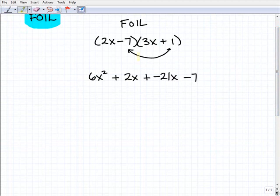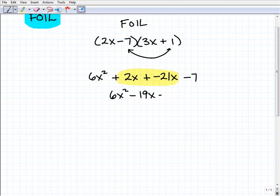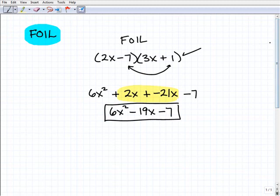And now all we have to do is combine like terms and finish this up, and we get 6x-squared. 2x plus a negative 21x will give us negative 19x minus 7. So this is the product of these two binomials, and we use the FOIL method.